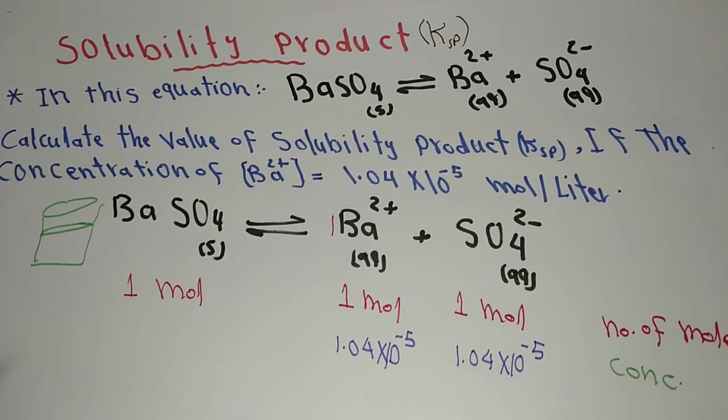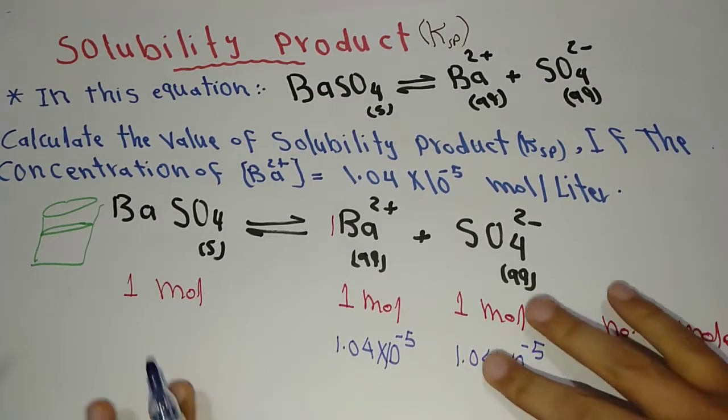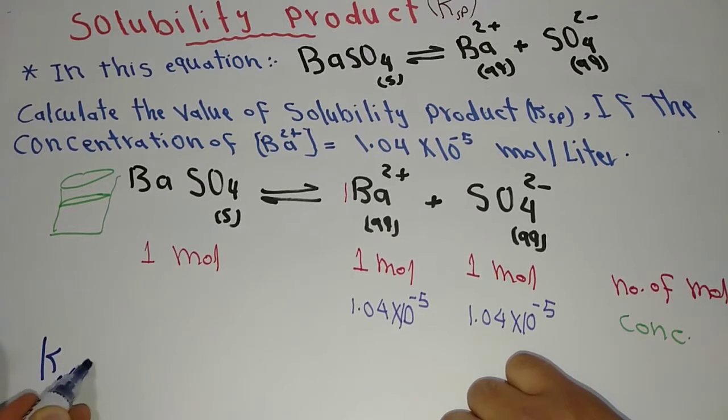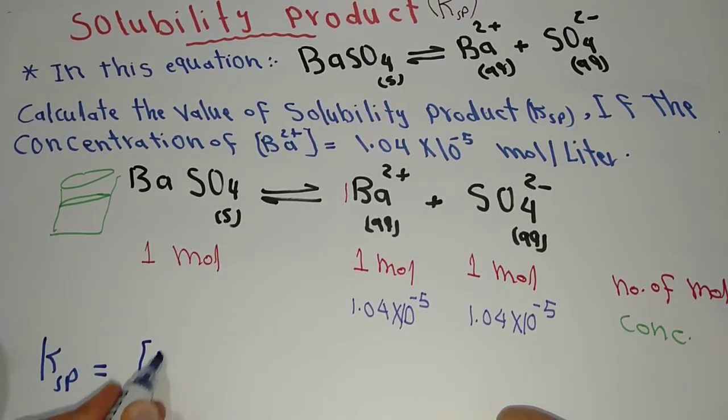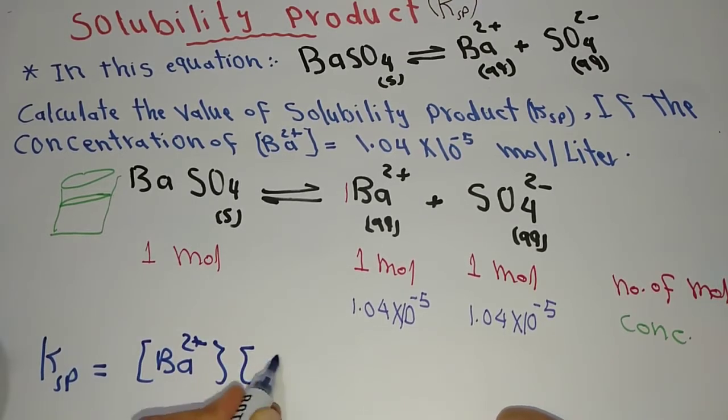And then write the solubility product rule: Ksp equals the concentration of barium cation times the concentration of sulfate anion.